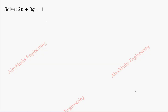This is of the form capital P into small p plus capital Q into small q equal to r. We have 2p plus 3q equal to 1. By comparison, capital P is 2, capital Q is 3, and r is 1.